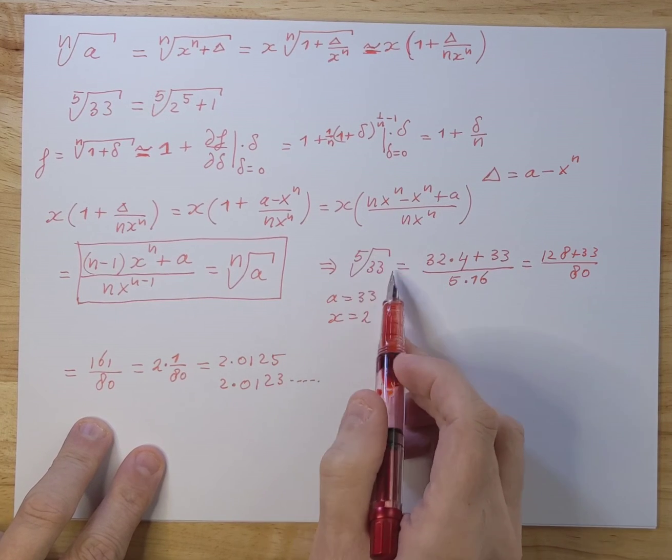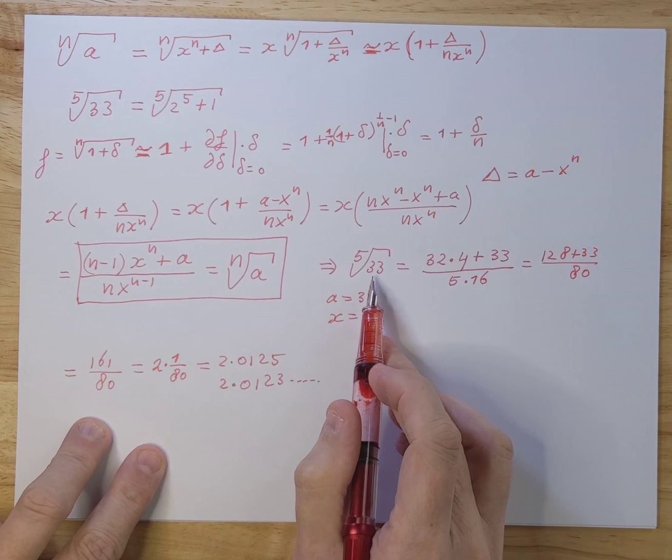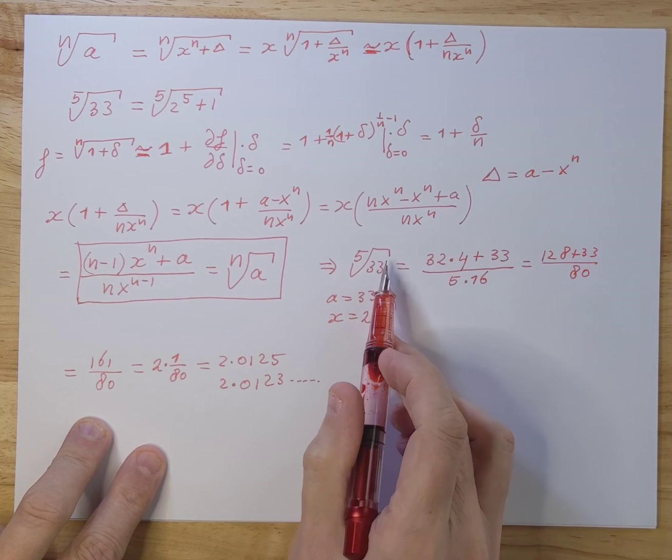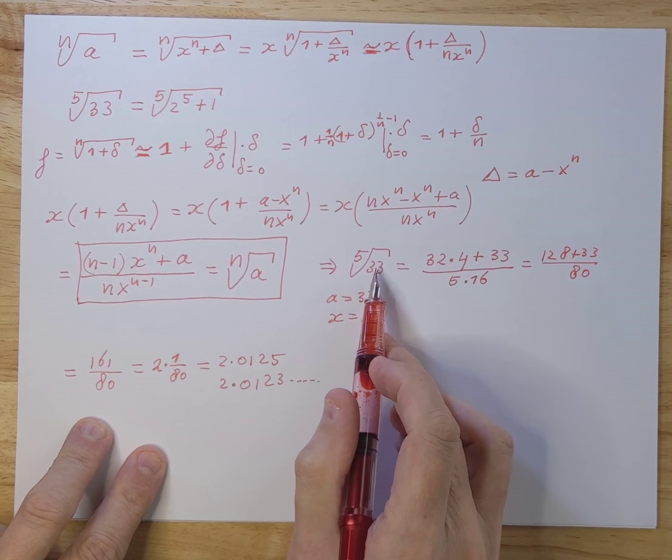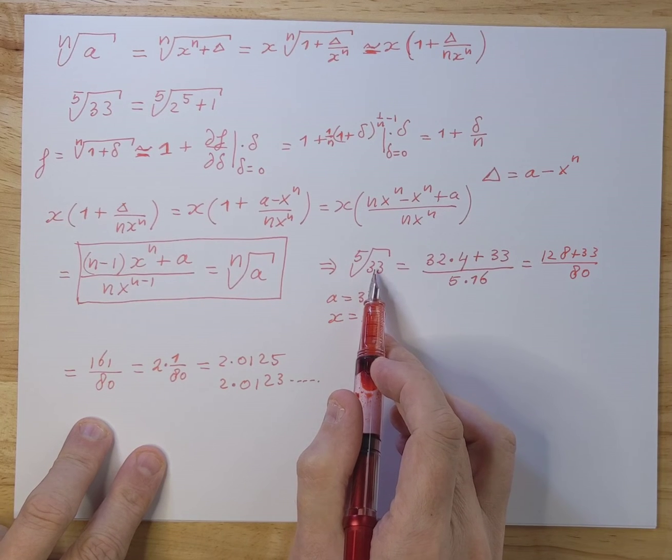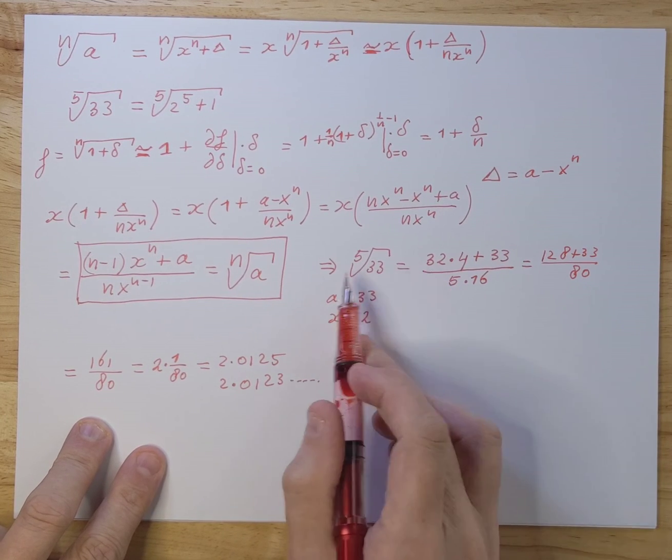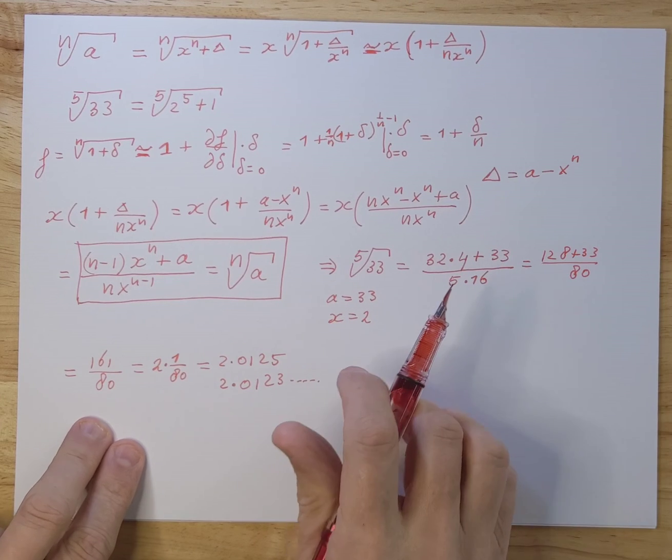Now there's a reason for that, of course. The approximation is so good because it's very close to the 2 to the fifth, which is close to a real one, namely 32. The farther you go away, the bigger the error will be.